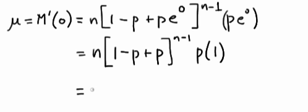And what we're left with is n times p, because 1 minus p plus p is 1, and 1 to the n minus 1 is 1. We're just left with n times p.